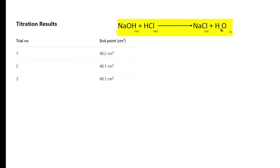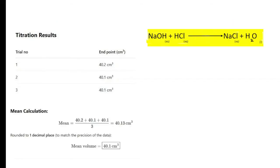Now we need to calculate the mean of these three. To calculate the mean, add the three values 40.2, 40.1, and 40.1 and divide by 3. When you do that you get 40.13, but you need to look at the actual readings you got. Here we got it to one decimal place, so you can't call it 40.13. You have to go back to one decimal place. So the mean volume is 40.1.